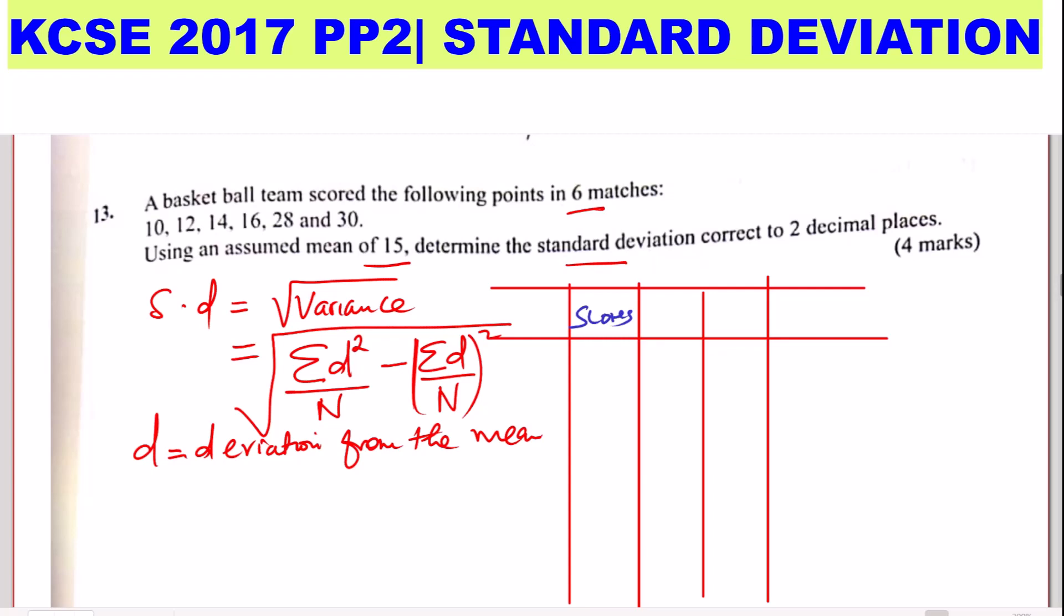Then I will have D. This will be the deviation from the mean. And this one will be given by the deviation from the mean will be X, which is the scores, subtract the assumed mean, which is 15. So the scores represent X. So D will be X minus 15, that is the deviation from the mean. Then I will need to have D squared, looking at this formula.